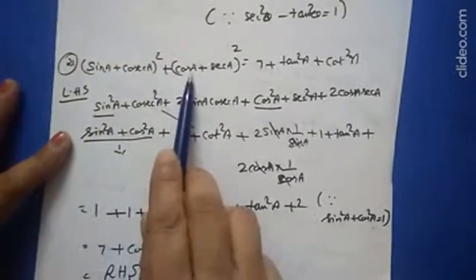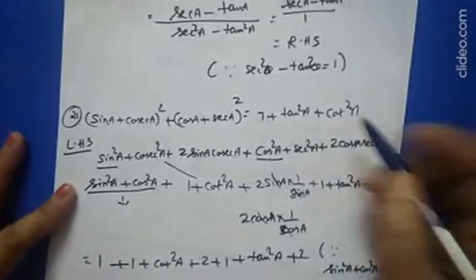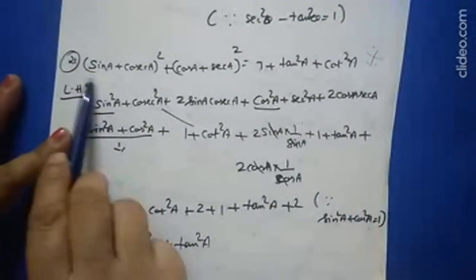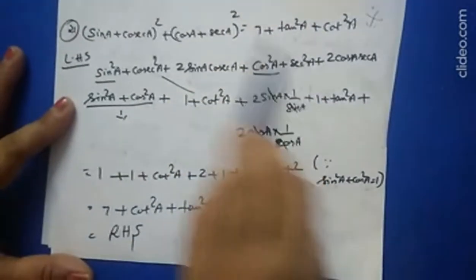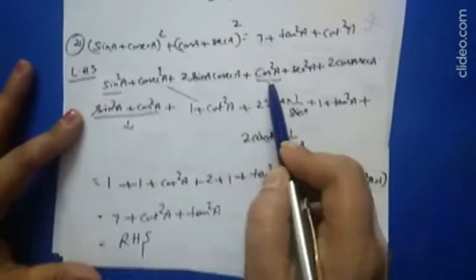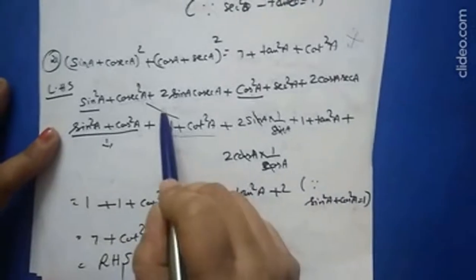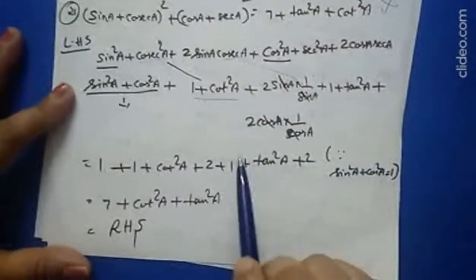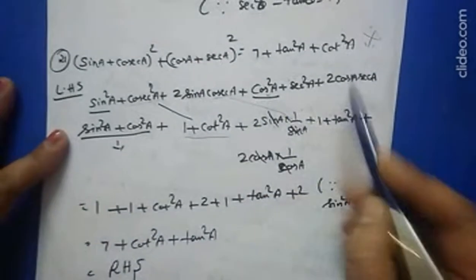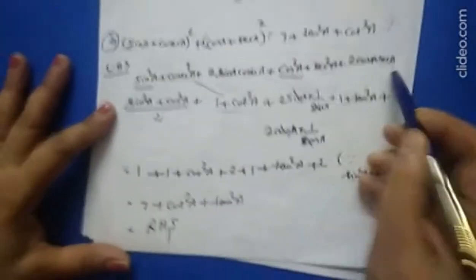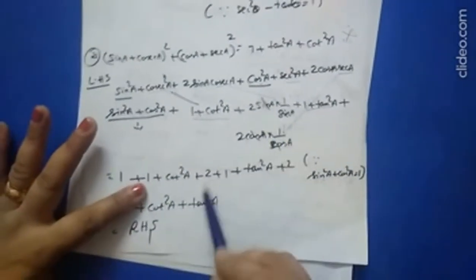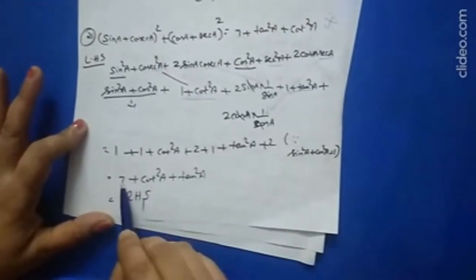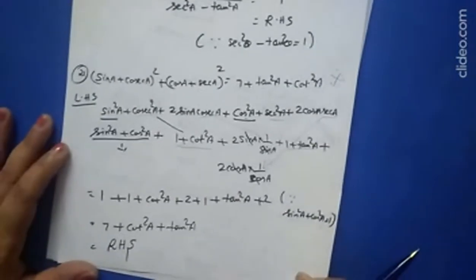Question 21: (sin a + cosec a)² + (cos a + sec a)² = 7 + tan²a + cot²a. This is a very important question. Expand using (a+b)² formula: sin²a + cosec²a + 2·sin a·cosec a + cos²a + sec²a + 2·cos a·sec a. Combine sin²a + cos²a = 1; write cosec²a = 1 + cot²a, sec²a = 1 + tan²a; 2·sin a·cosec a = 2 and 2·cos a·sec a = 2. So 1 + 1 + cot²a + 1 + tan²a + 2 + 2 = 7 + tan²a + cot²a, which is the right hand side.